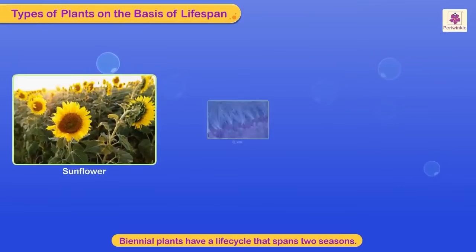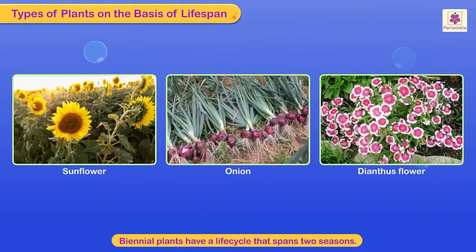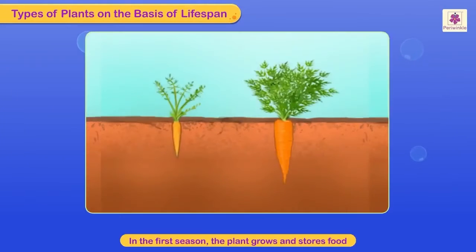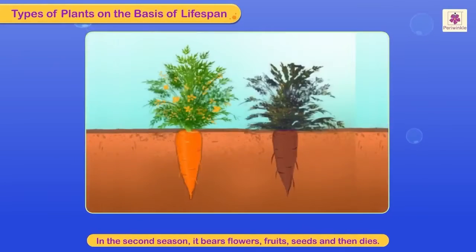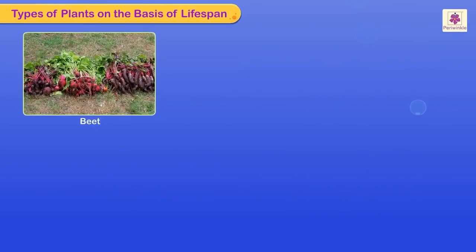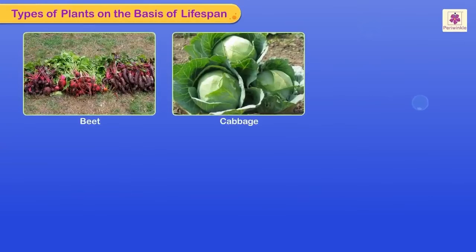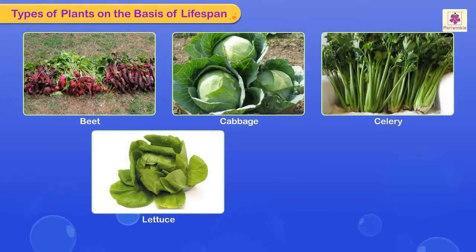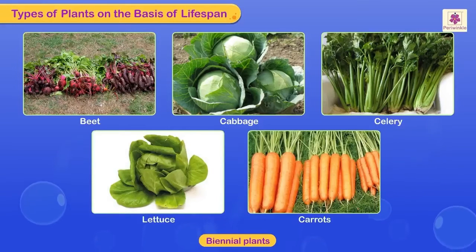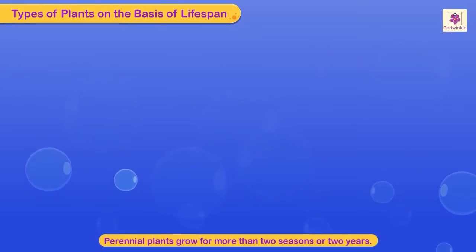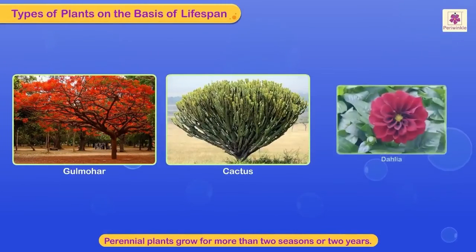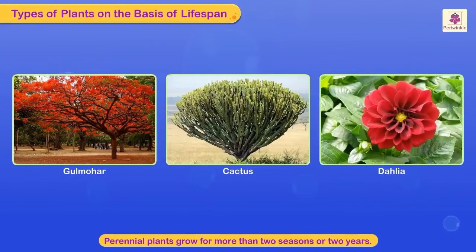Biennial plants have a life cycle that spans two seasons. In the first season, the plant grows and stores food, and in the second season, it bears flowers, fruits, seeds, and then dies. Beet, cabbage, celery, lettuce, and carrots are biennial plants.